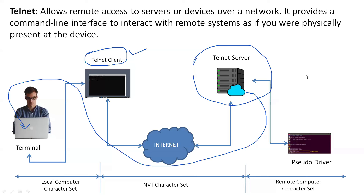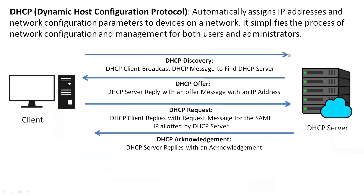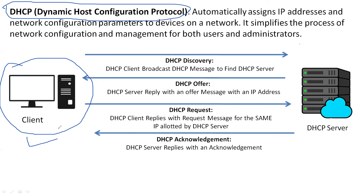The next protocol is DHCP — Dynamic Host Configuration Protocol. This protocol assigns IP addresses to clients dynamically. Assume this is my client which needs an IP address dynamically. That IP address can be allocated by a DHCP server. First, your PC generates a request for an IP address and forwards a DHCP discovery message.